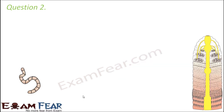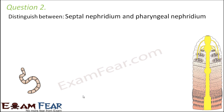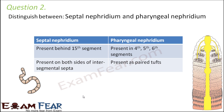Question two: distinguish between septal nephridium and pharyngeal nephridium. We discussed three types of nephridia: septal, pharyngeal, and integumentary. Septal nephridia are present behind the 15th segment, on both sides of intersegmental septa. Pharyngeal nephridia are present near the pharynx, in the earlier segments, as paired tufts. Septal nephridia are distributed uniformly, whereas pharyngeal nephridia appear as distinct paired tufted structures.